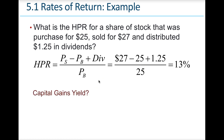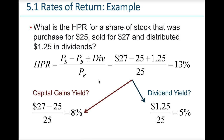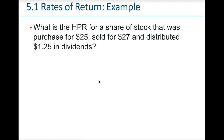If we want to calculate the capital gains yield, we look at the ending stock price minus the beginning stock price divided by the beginning stock price — or as I usually say: new minus old divided by old. That gives us 8%. Without the income, the return is only 8%. Dividend yield would just be the income or dividend divided by the beginning stock price. Together, the 8% and the 5% make up the 13%.